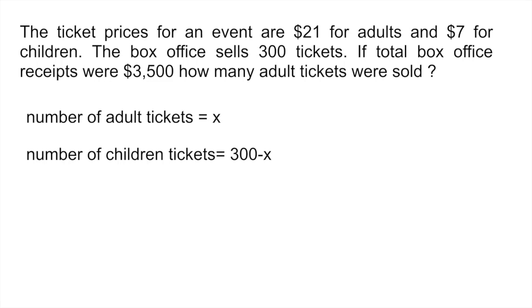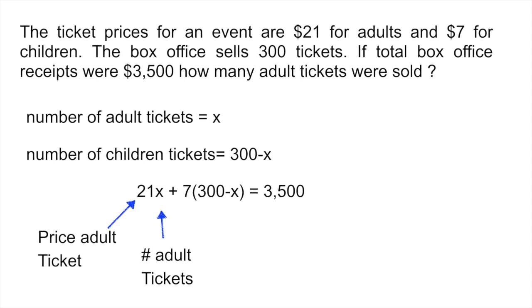We would set up our equation like this. The first term is 21x, which corresponds to the adult tickets. $21 is the price per adult ticket and x is the number of adult tickets. The second term corresponds to children's tickets. $7 was the price for a child's ticket and 300 - x is the number of tickets sold to children. And all of this equals 3,500 which is what was sold at the box office.